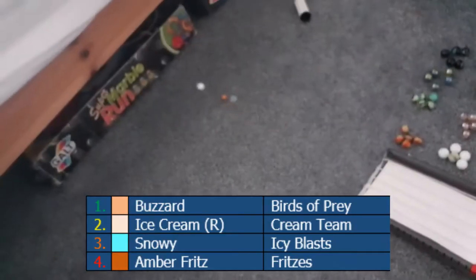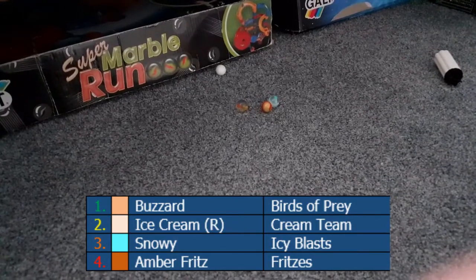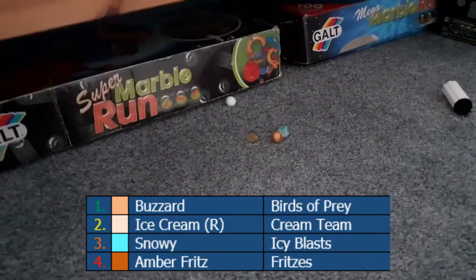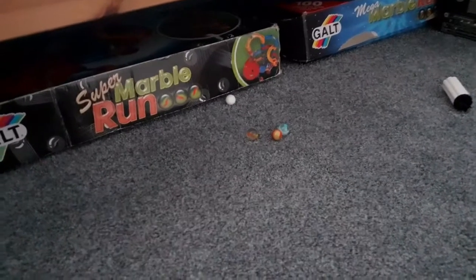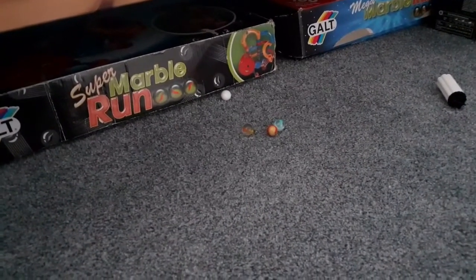Actually ends up being tighter for 1st than it is for 3rd. Icy Blasts come in 3rd, Fritzers clearly 4th, but Birds of Prey are narrowly going to be given the win there. But very close over the Cream Team. Some might even argue the Cream Team, but I'm pretty sure the Birds of Prey just about have it there, but it will be very close as you can see.